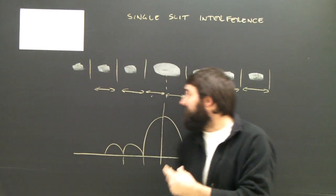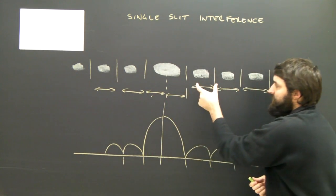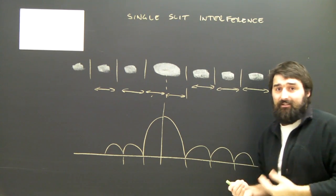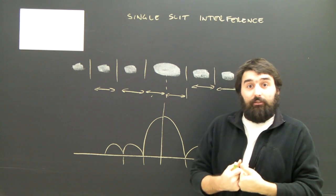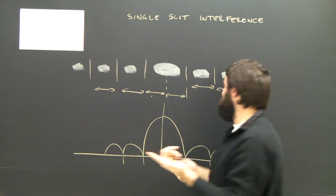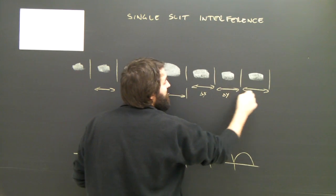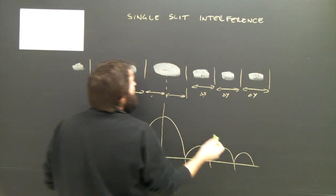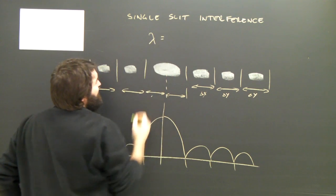So when we had two slits, we said that each dark fringe was a distance delta x apart. Well, we've used delta x, so we need a new letter, delta y. Okay, wonderful. So this is delta y.